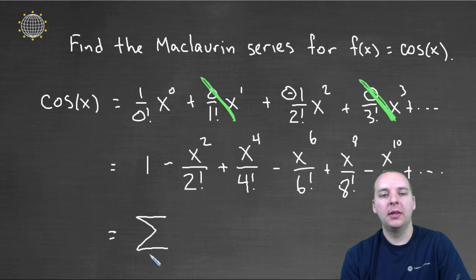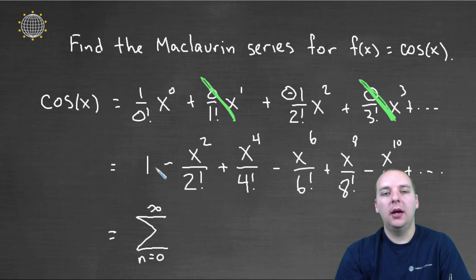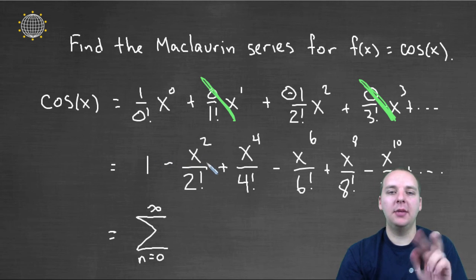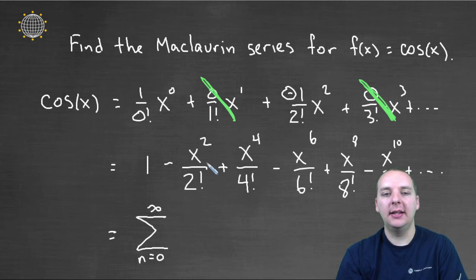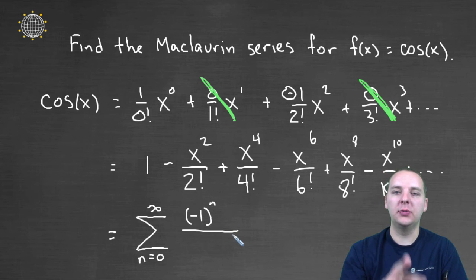So we'd have the sum n equals zero to infinity. And let me just look at this guy. Let me look at the line above. A couple of things I see is that this guy alternates in sign plus minus plus minus. That tips me off right off the bat that I'll probably have a minus one to the n. You remember those are the guys that go plus one, minus one, plus one, minus one, et cetera.